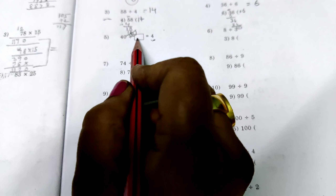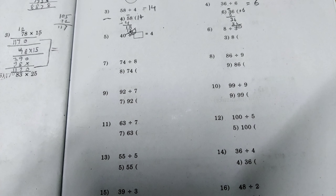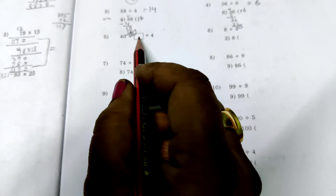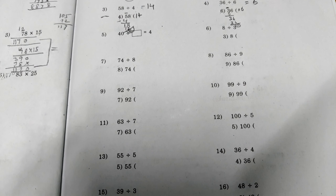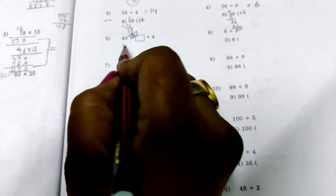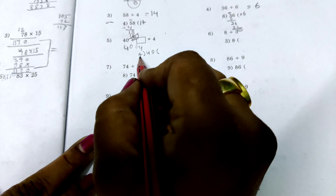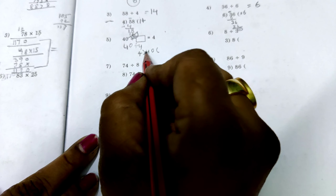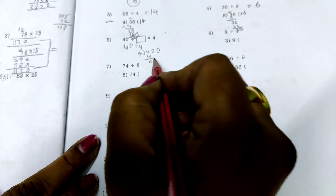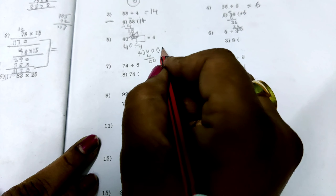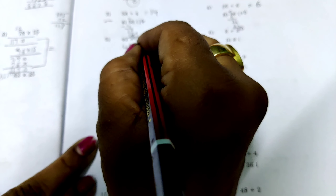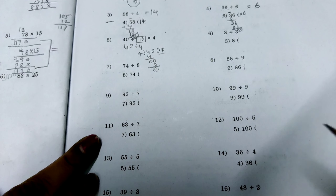Observe the question correctly: 40 divided by dash equals 4. Here we have to find out the divisor. To find the divisor, we have to divide the dividend by the quotient. So write 40 divided by 4. When we take 1 digit, that is 4. How many times can we subtract 4 from 4? Only 1 time. So write 1 in quotient place. 4 minus 4 is 0. Get down 0. How many times can we subtract? 0 times. So 4 zeros are 0. Final answer is 10. This answer should be written in the given box.